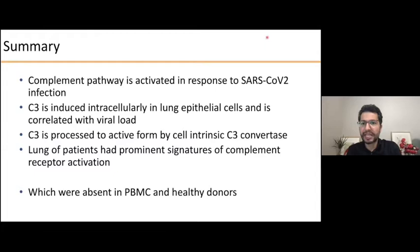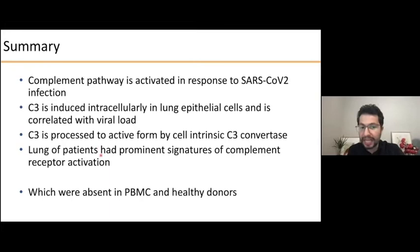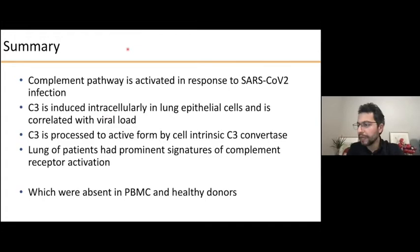To summarize this part: we have shown that the complement pathway is unexpectedly activated in response to SARS-CoV-2 infection within the lung epithelial cells of patients, highly correlated with viral load. It is processed to its active forms C3A and C3B, which in vivo engage their receptors. These signatures were only present within the site of inflammation — within the lung — not in blood samples from COVID patients.